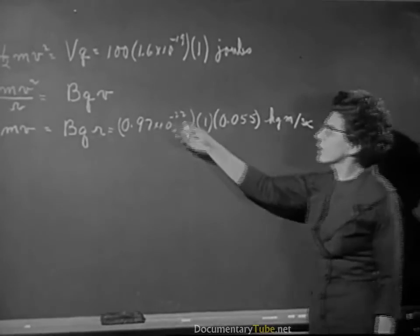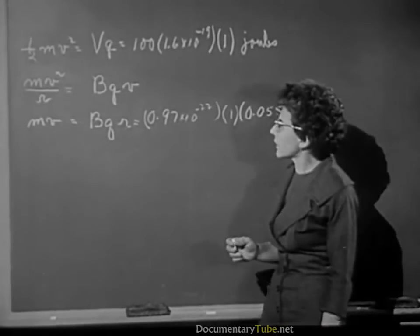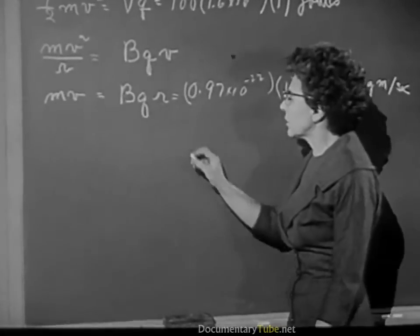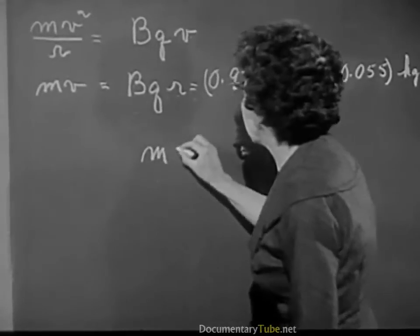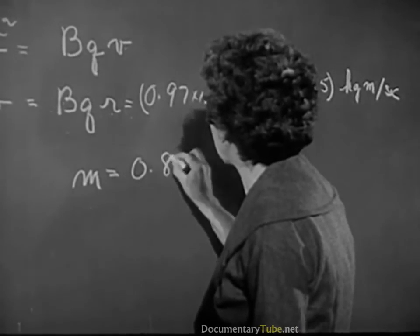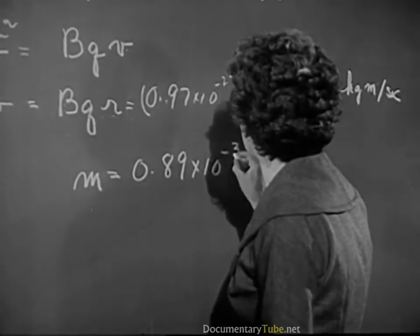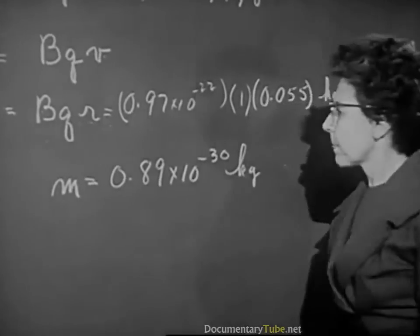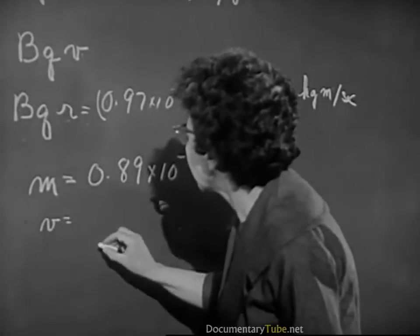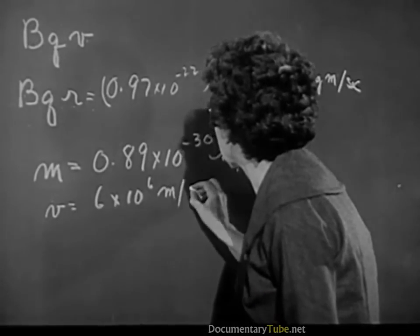It's clear that from these two equations we can determine both the mass and the velocity. When we do this for the particular values we have here, we get the mass of an electron equal to 0.89 times 10 to the minus 30 kilograms. Incidentally, the velocity in this case is about 6 times 10 to the sixth meters per second.